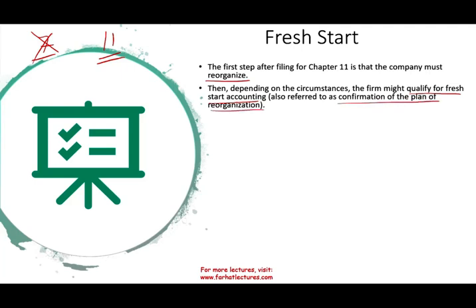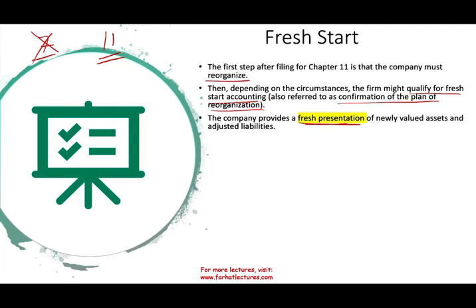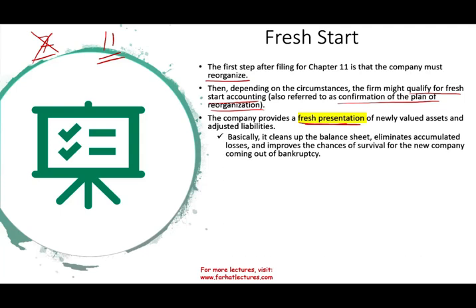Basically, if they get out of bankruptcy, the company will provide a fresh presentation of newly valued assets and adjusted liabilities. Fresh means it's new — everything is new. Their assets are new assets, their liabilities are new liabilities. They will clean up their old balance sheet, eliminate any accumulated losses, and improve the chances of survival as the new company coming out of bankruptcy.